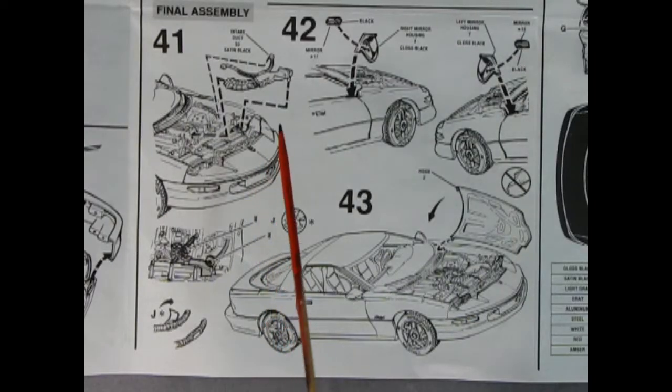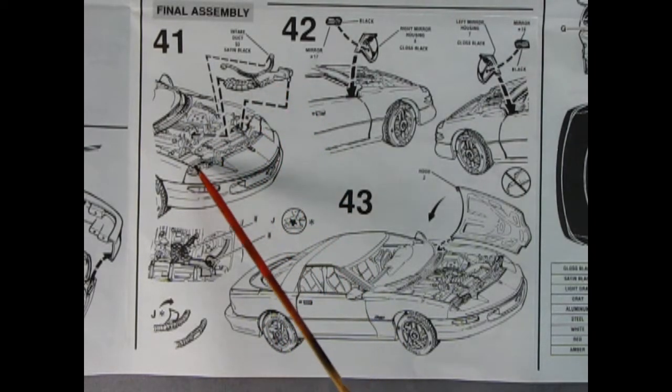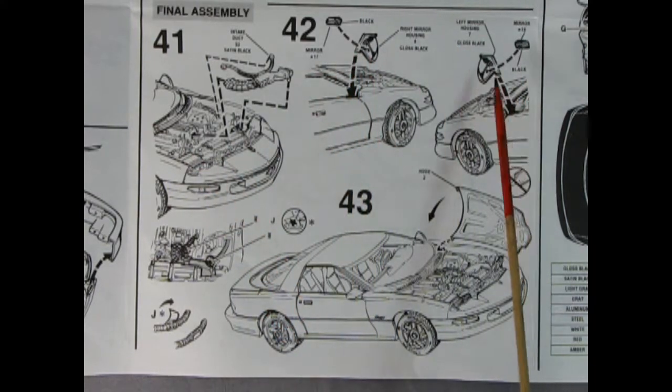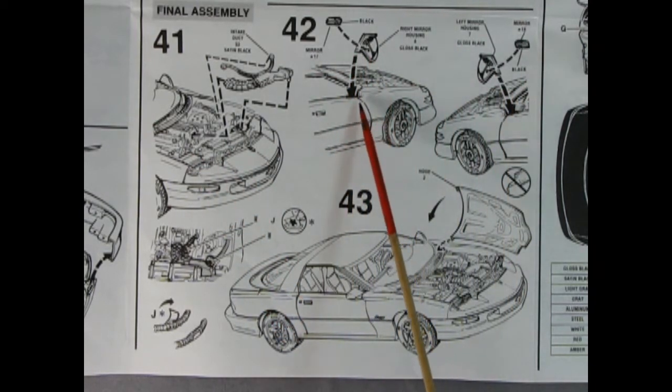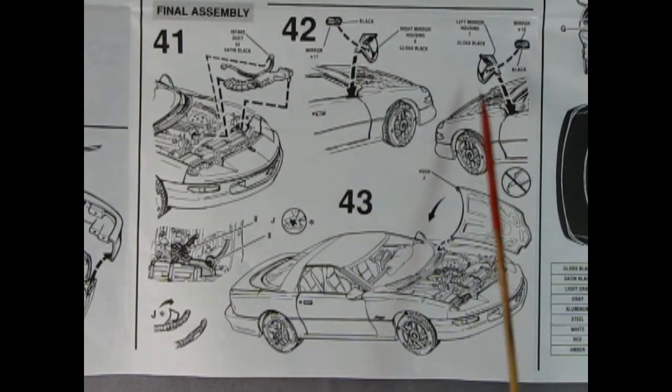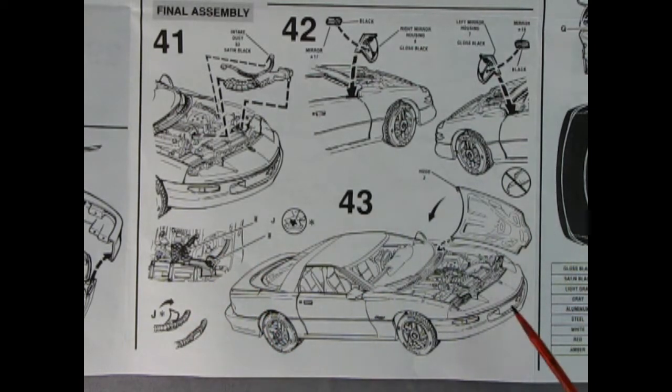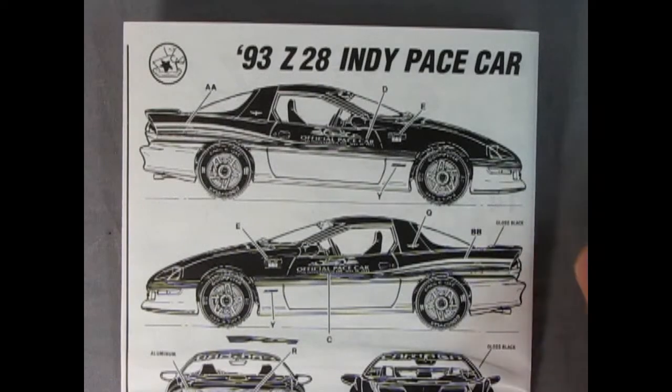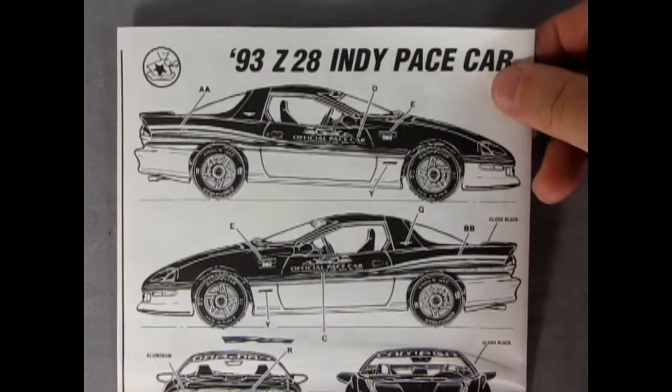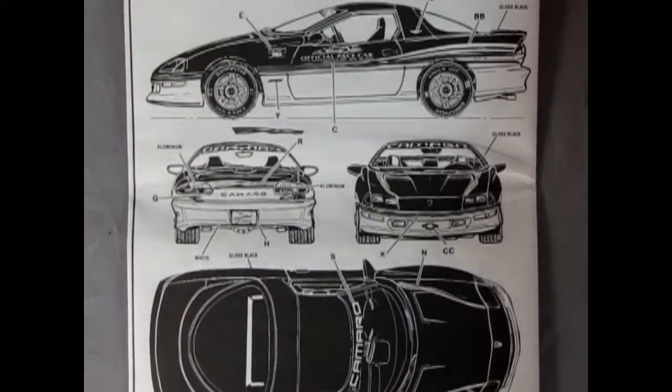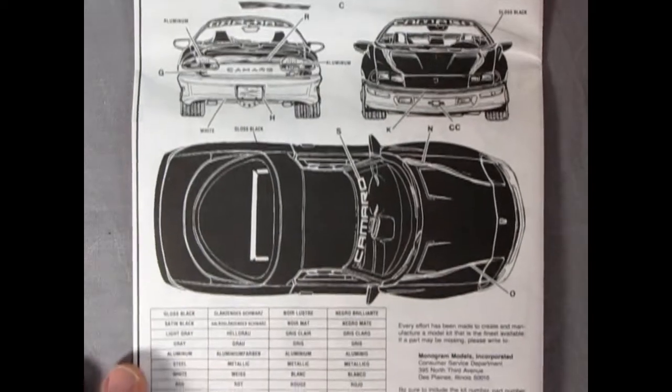Here we get panel 41 showing the intake duct being glued in under the engine bay. And then 42 we get our right and left hand side mirrors being glued on the body with the chrome being inserted as well. And then panel 43 we see some decals and the upper hoses. And then we get our hood dropping in place. Now here on our instruction back panel is all the decal placement for right and left hand side as well as the back and up on the top of the car.